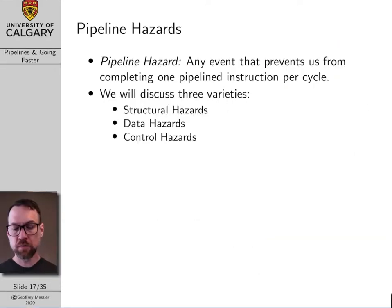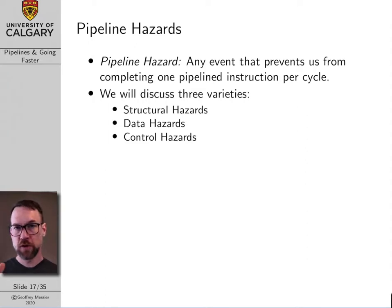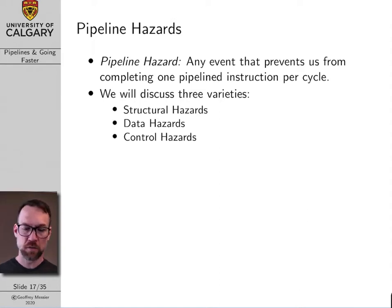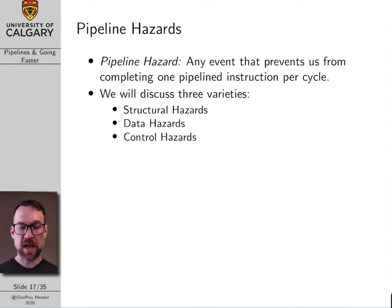The term pipeline hazard is any event that prevents us from completing one pipelined instruction per cycle. A perfectly operating pipeline is cranking out one result every single clock cycle, and anything that causes us to deviate from that is referred to as a hazard. There are basically three different types of hazards: structural hazards, data hazards, and control hazards.